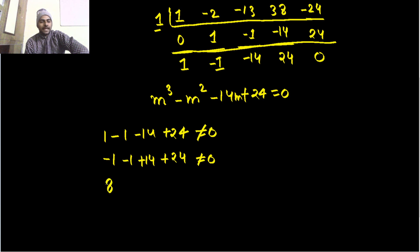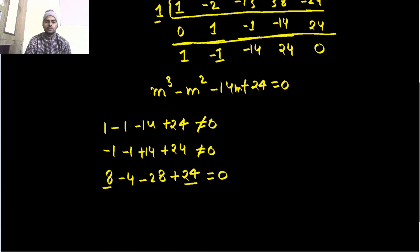8 - 4 - 28 + 24. So 24 + 8 = 32 and 28 + 4 = 32. Yes, 32 - 32 = 0, so 2 is a root.